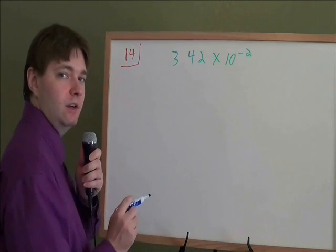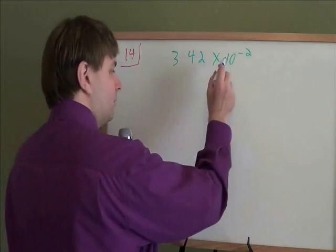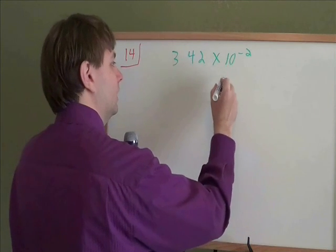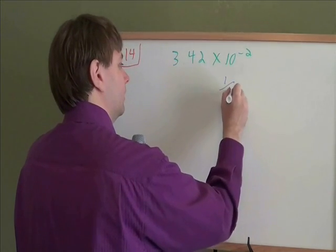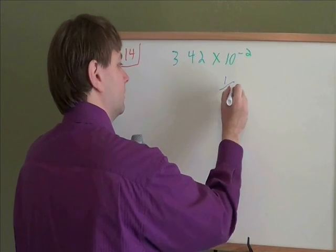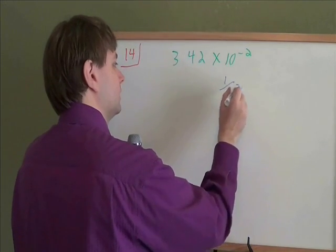3.42 times 10 to the power of negative 2. Let's remember, what is a negative power? A negative power means you divide by that exponent. It means you turn it into 1 over 10 to the negative 2.